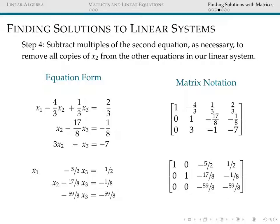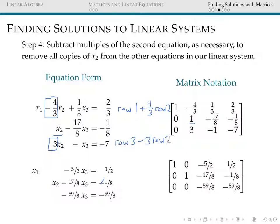Now that we've rescaled our second equation so the coefficient in front of x2 is 1, we subtract as many copies of row 2 as needed from rows 1 and 3 to eliminate x2 from those equations. From row 1, we replace it with row 1 plus 4 thirds of row 2, and for row 3, we replace it with row 3 minus 3 copies of row 2. At this point, in the first two columns there's exactly one copy of x1 and one copy of x2.